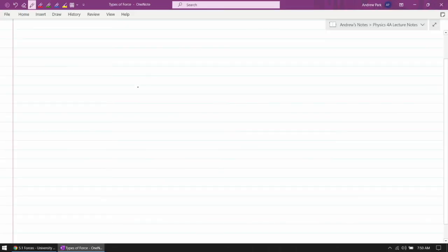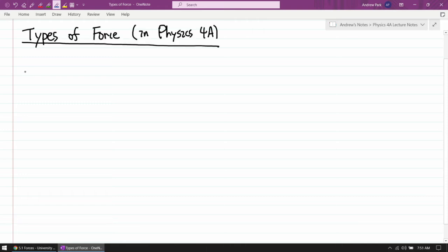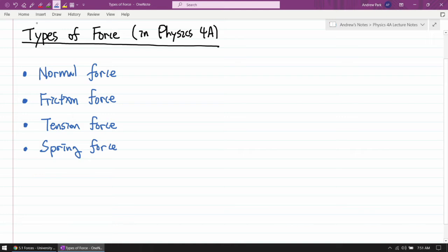All the forces that you might be drawing on a free body diagram, they will either have to come from something that's touching the object or it will have to be gravity if it's coming from something that's not touching the object. So let me summarize. This is the comprehensive list of different types of force in physics A. We have the normal force, friction force, tension force, spring force, and finally, we have gravity.